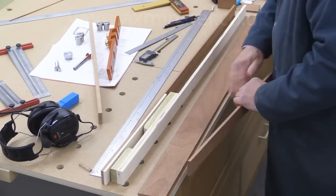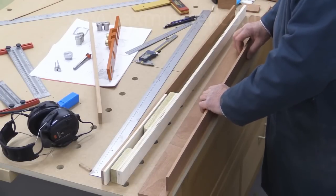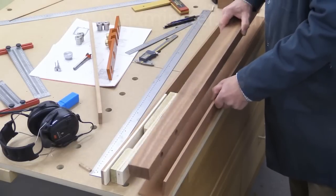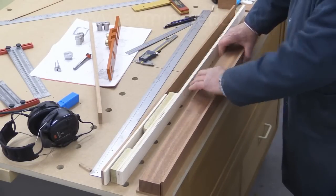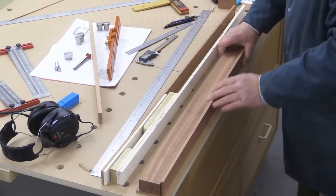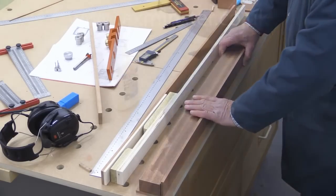And in order to make sure that when I glue this on it's going to sit square, I've got this piece of wood which I'm going to put behind it, and that will help me not only get this piece following the edge as it should, but it'll also allow me to get it square.